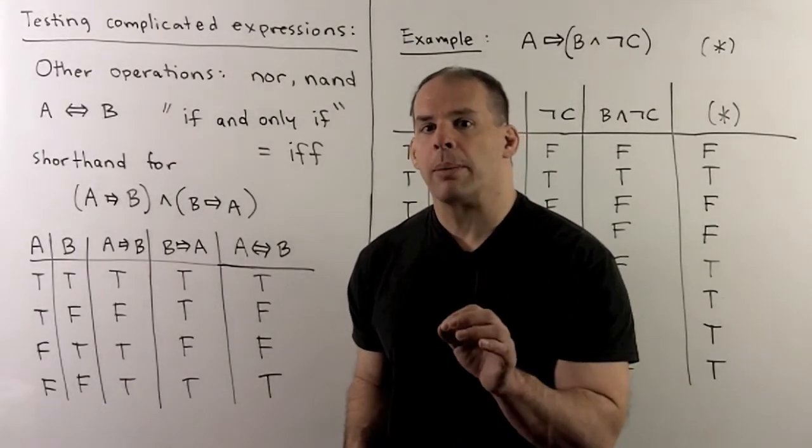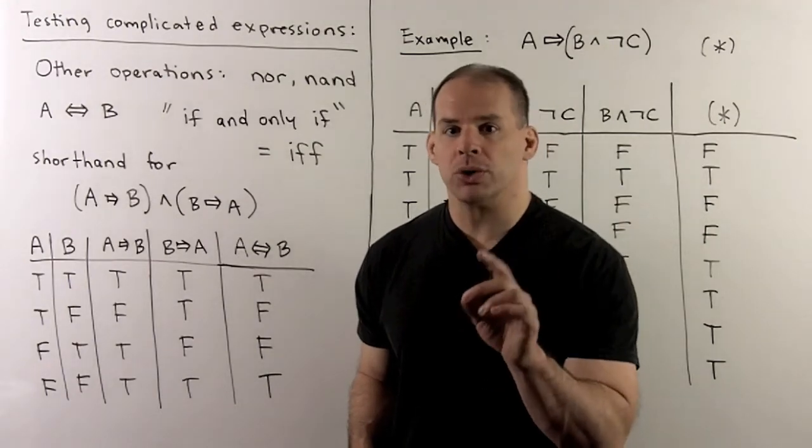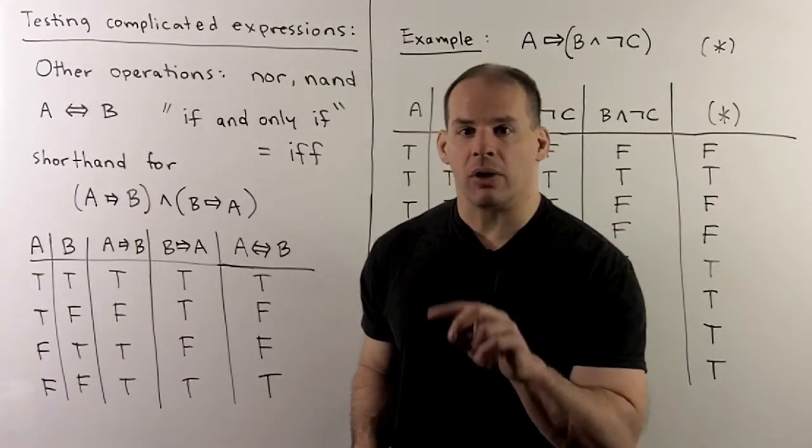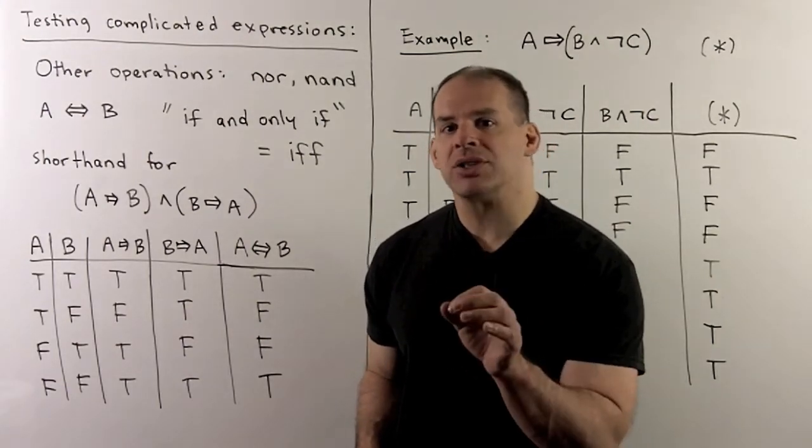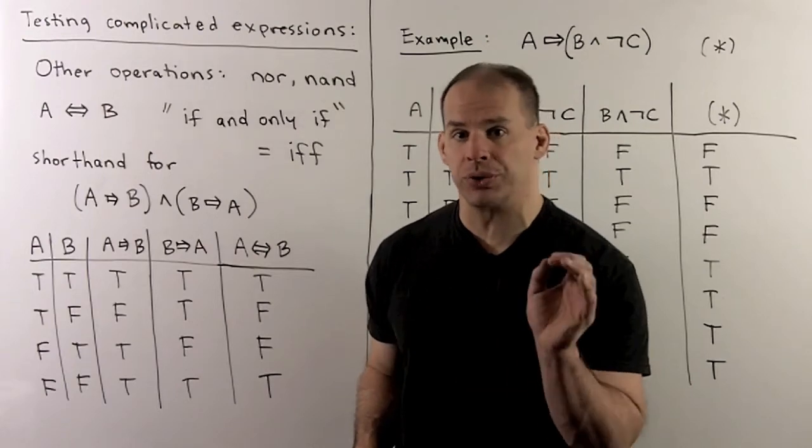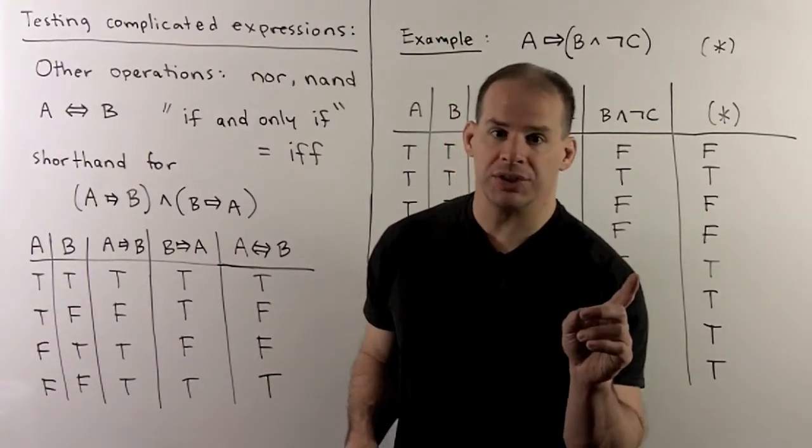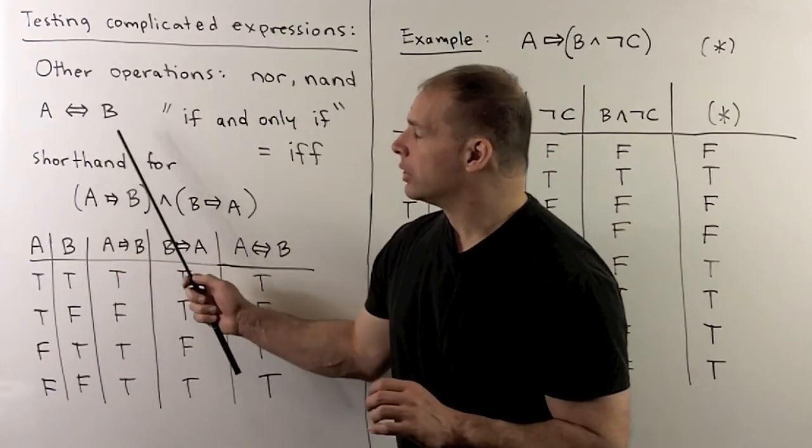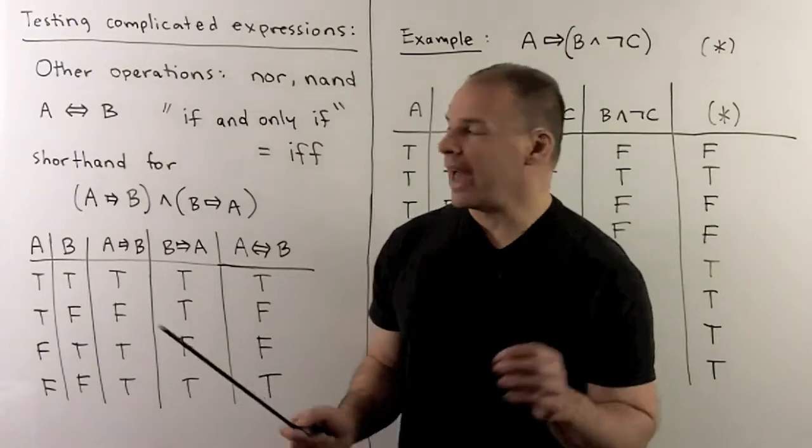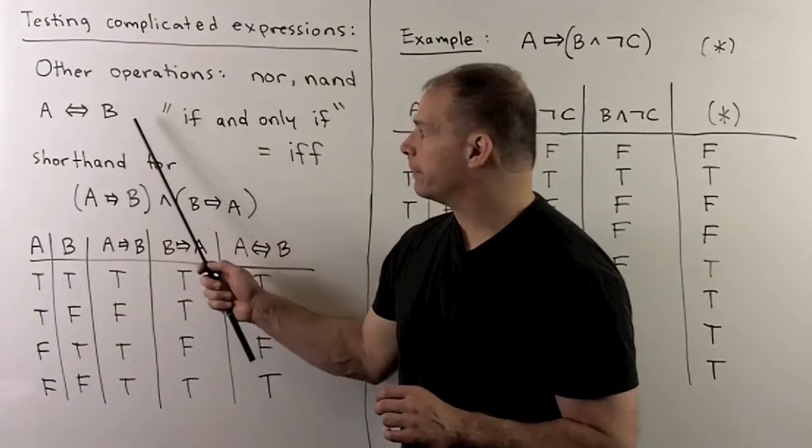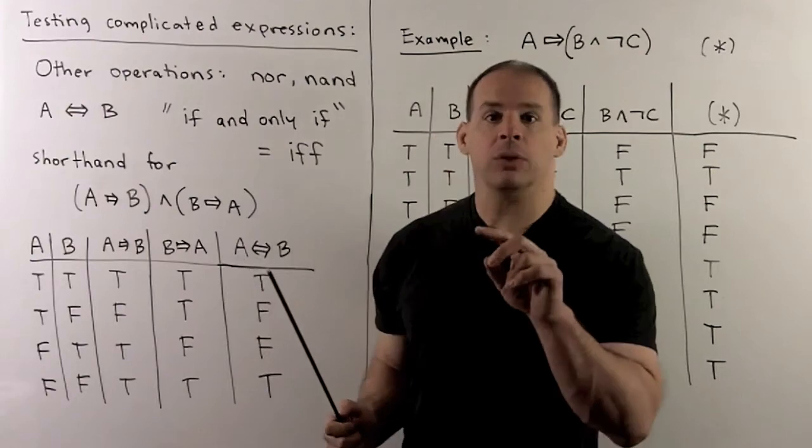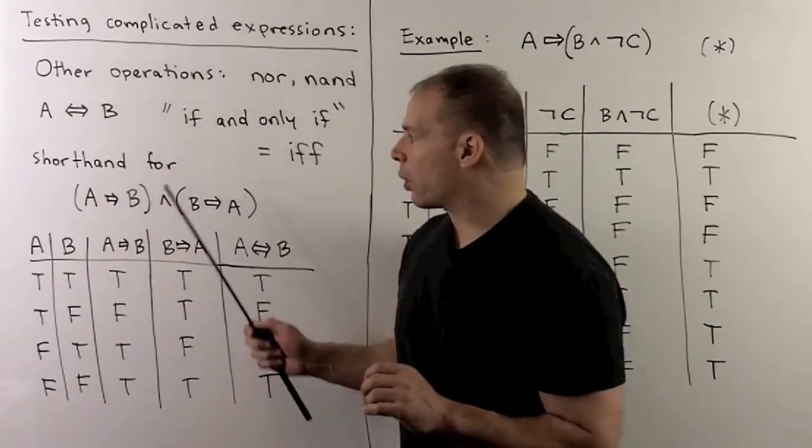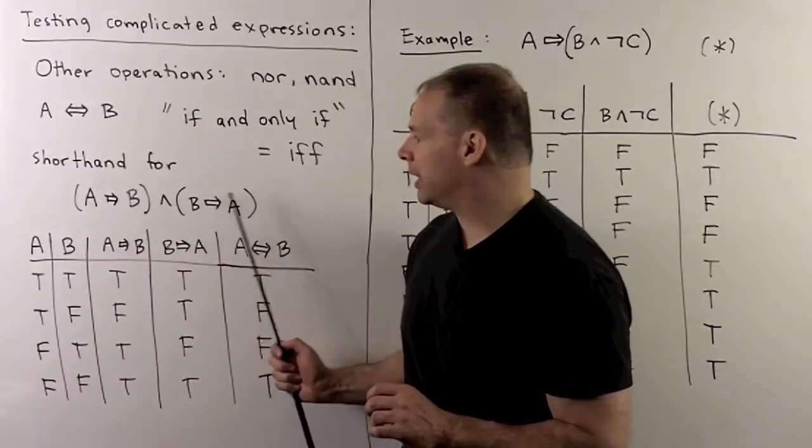Now, there are more operations beyond those four. Those four are the ones we typically use in proofs. For us, we'll bring in other operations under the guise of using complicated expressions in our truth tables. So, for instance, another operation, we have biconditional. So, we write this with a double arrow. We say, A if and only if B, and you'll see this written as iff with two Fs. Now, this is just a shorthand for A implies B and B implies A.